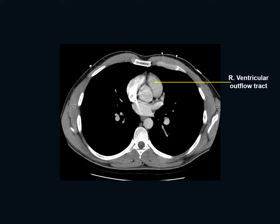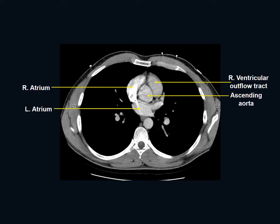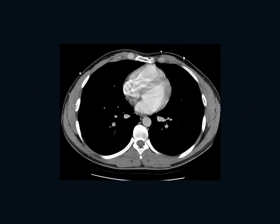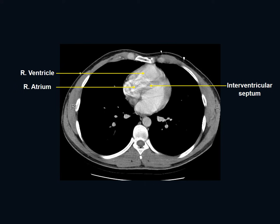On a more inferior image we see the right ventricular outflow tract and the right atrium, where the superior vena cava ends. There is mixing of contrast visible within the right atrium. We also see the ascending aorta, and now the left atrium — which receives the confluence of the pulmonary veins — and the descending aorta. Further inferiorly, we see the interventricular septum, the right ventricle, the right atrium, a portion of the inferior vena cava as it enters the right atrium, and the left ventricle.